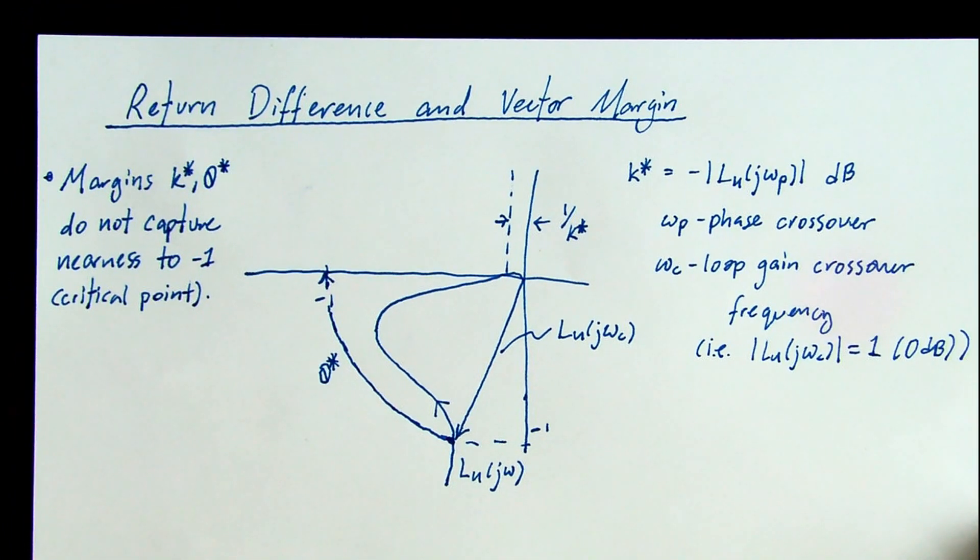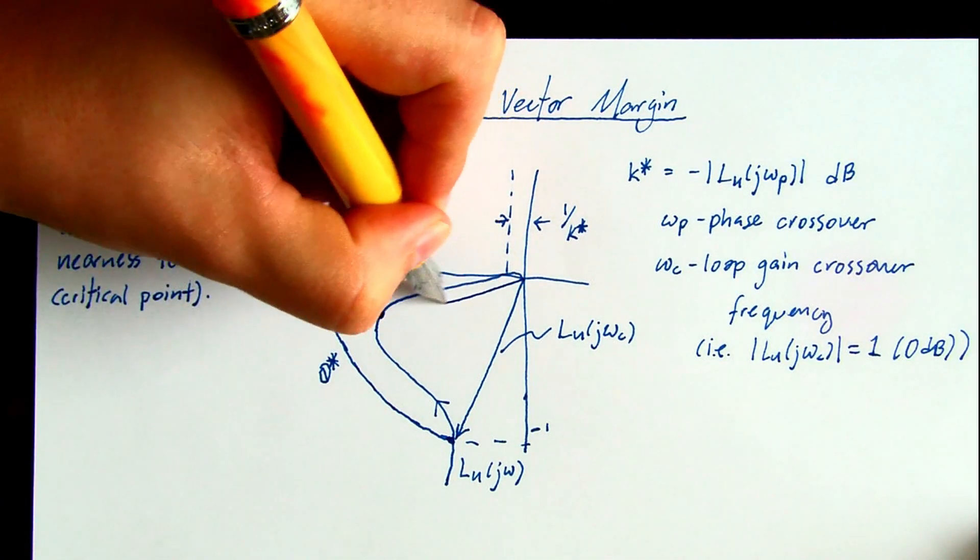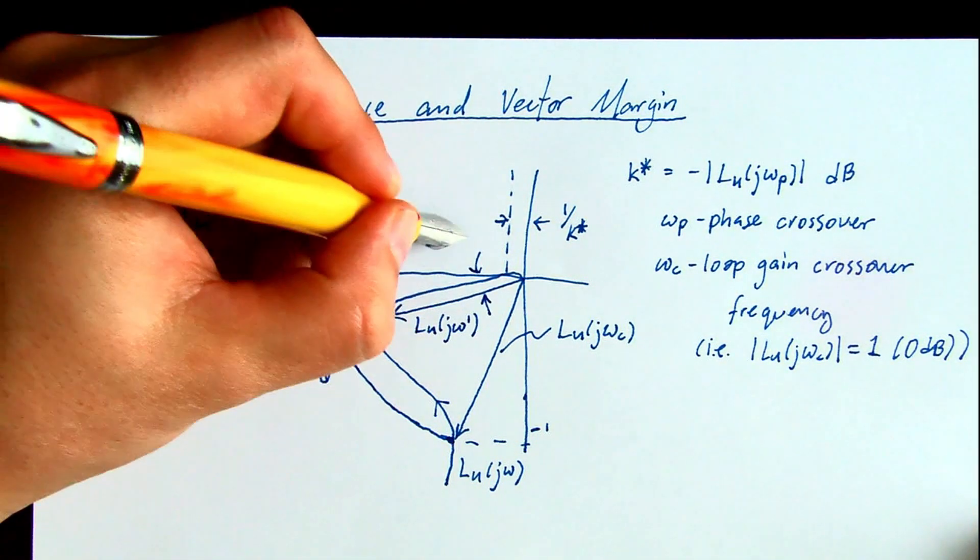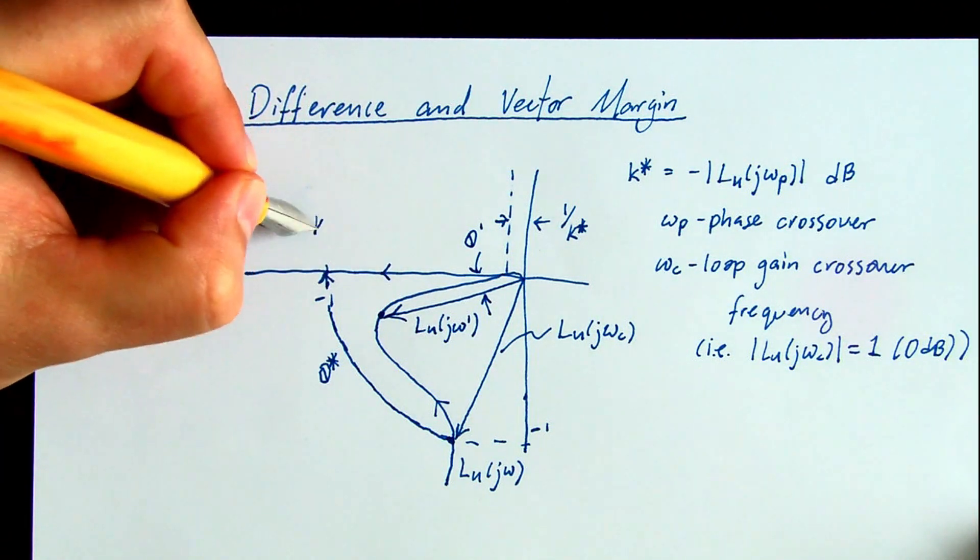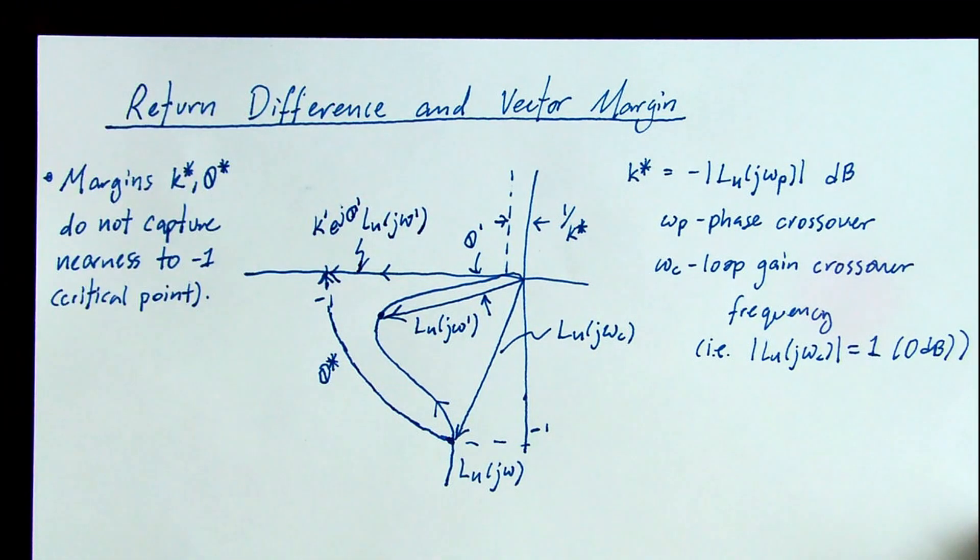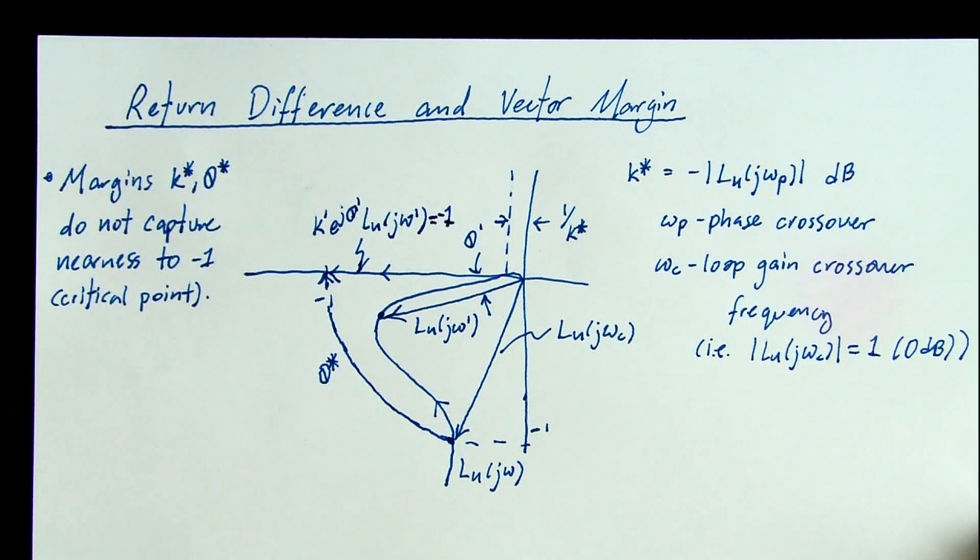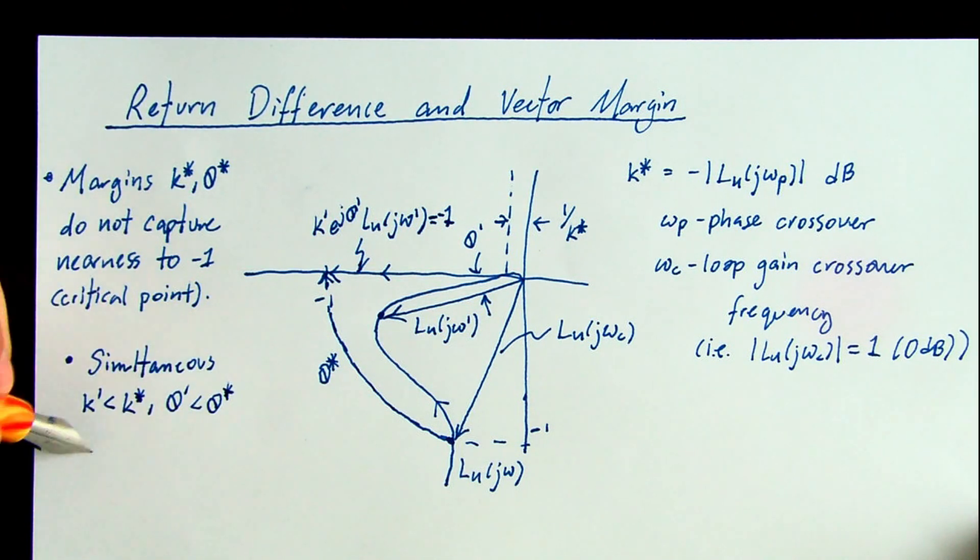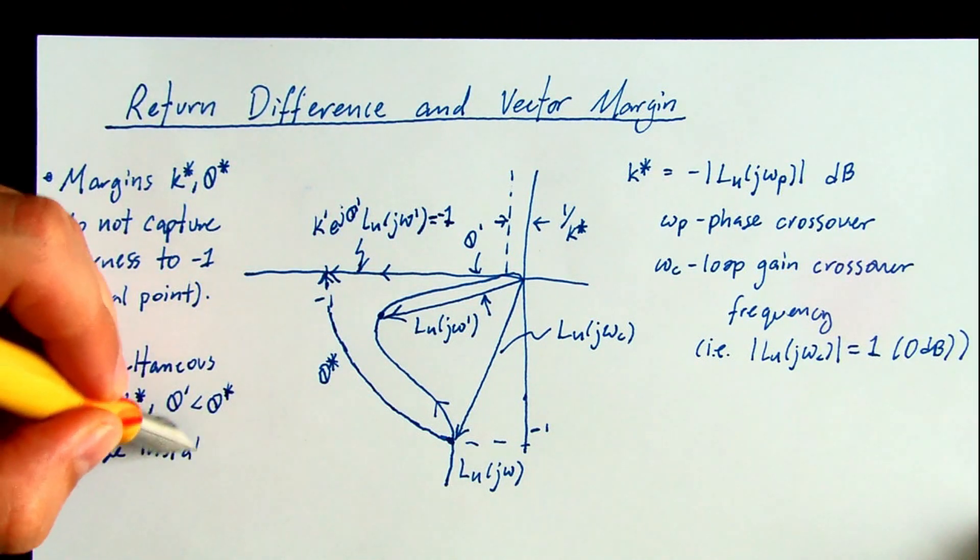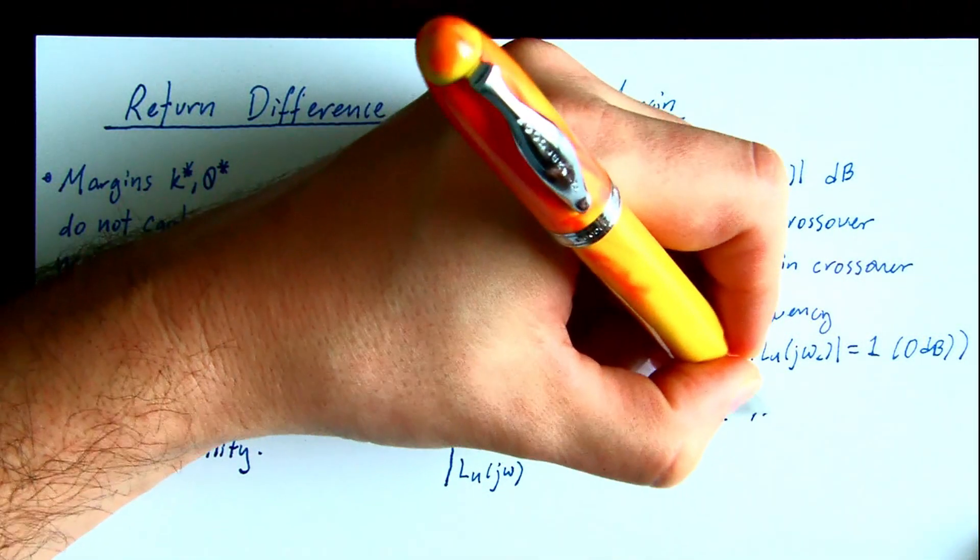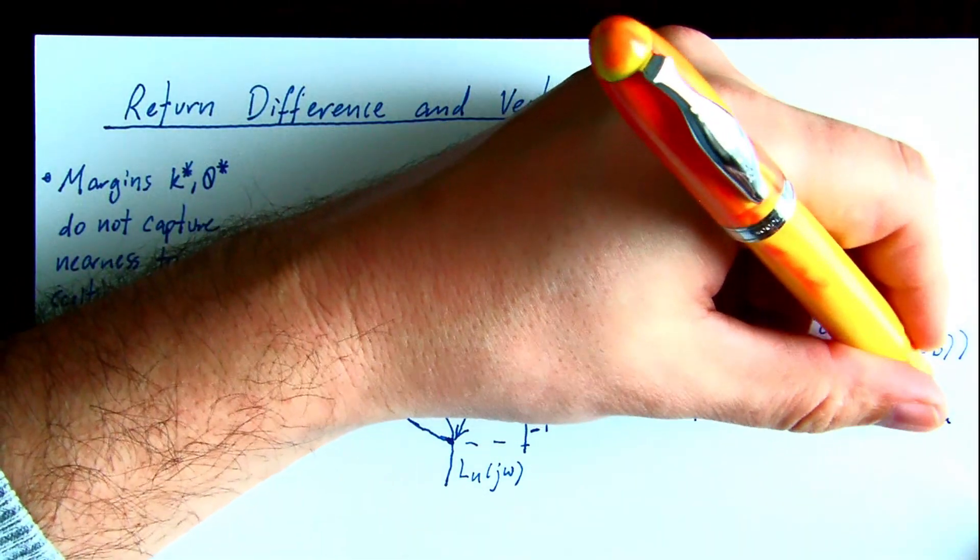As we did in the last video, we can draw a phasor to the loop gain where it comes close to minus one, and then by inspection determine phase and gain that bring that loop gain to the critical point. So this is instability caused by simultaneous gain and phase disturbances that are less than the gain and phase margin. This motivates the need for a robustness metric that captures the nearness of the loop gain to the critical point.